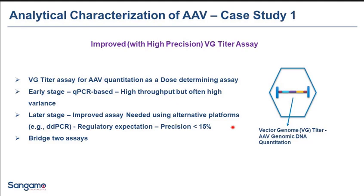The first case study is the Vector Genome Titer Assay, which is used as a dose-determination assay and carries a lot of scrutiny. In early stages, a QPCR-based assay is common — it is high-throughput but can carry high variation. At later stages, there is an expectation to improve assay variance, either by improving the assay or switching platforms. One commonly used platform is digital PCR, for example ddPCR, which has been shown to give robust assay performance. The expectation at this stage is to achieve a precision of less than 15% variance. Once you make a switch, you have to bridge the two assays and understand what it means for the product titer.